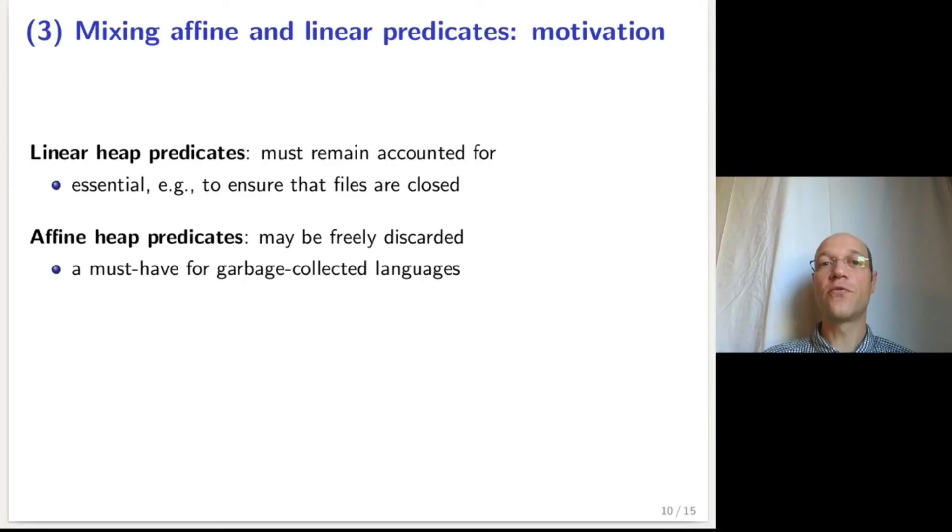The third feature is a mixing of affine and linear predicates. A linear heap predicate describes a resource that must remain accounted for throughout the reasoning. It is essential, for example, to prove that every allocated data eventually gets deallocated, or every file open eventually gets closed. An affine predicate, on the contrary, describes a resource that may be freely discarded in the reasoning.